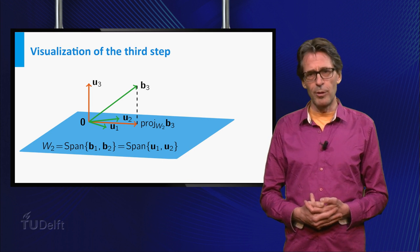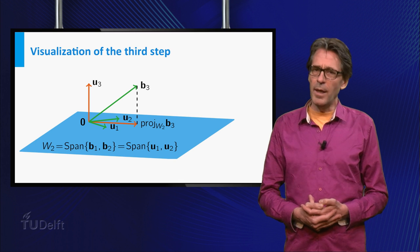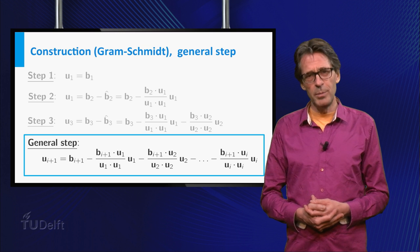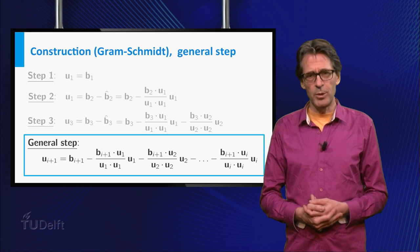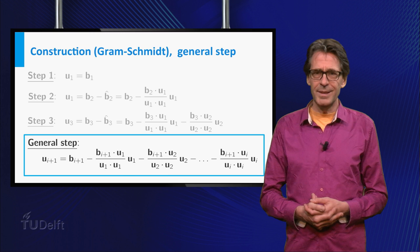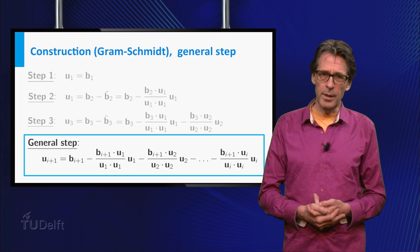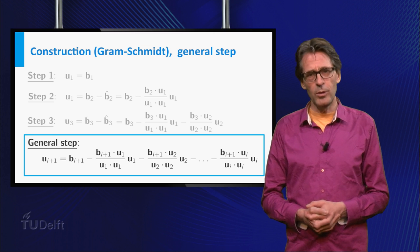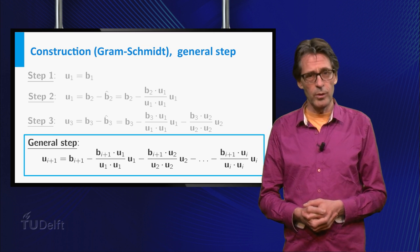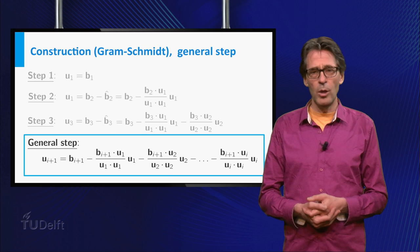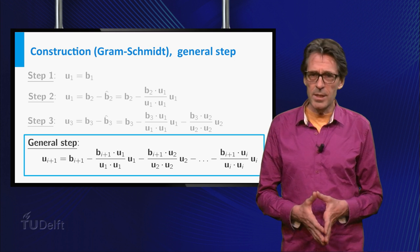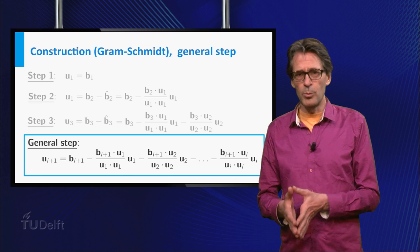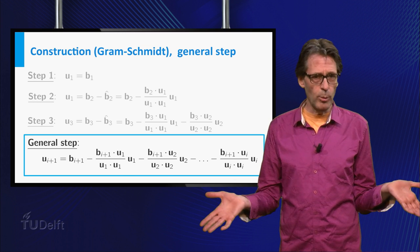From this on, all further steps are equivalent to the third step. Every time the new next vector ui plus 1 equals bi plus 1 minus its projection onto the subspace generated by b1 up to bi, its predecessors. And this projection is calculated using the already constructed orthogonal set u1 up to ui. After k steps this results in orthogonal basis u1 up to uk. Problem solved.